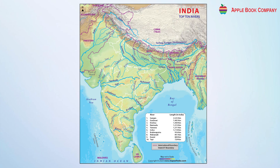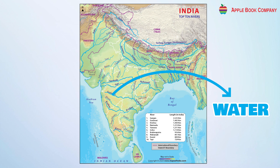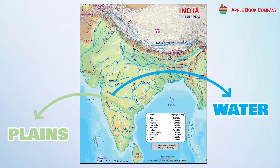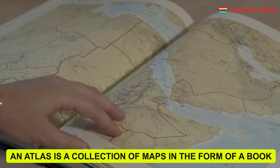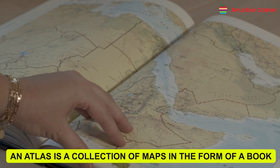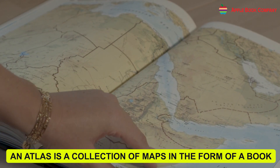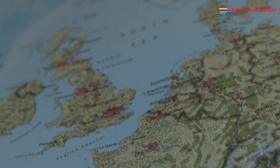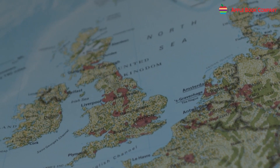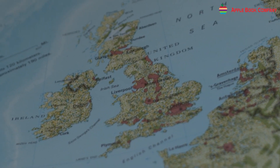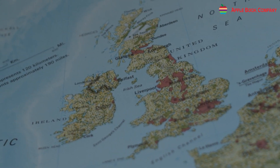Colors on a map follow a standard scheme to represent different land forms. Blue represents water, green shows plains, and brown indicates mountains. An atlas is a collection of maps in the form of a book. It showcases the physical features, political systems, and themes of different parts of the world.